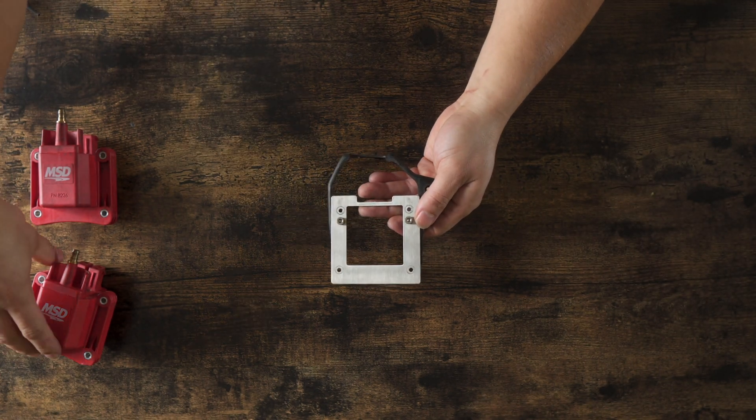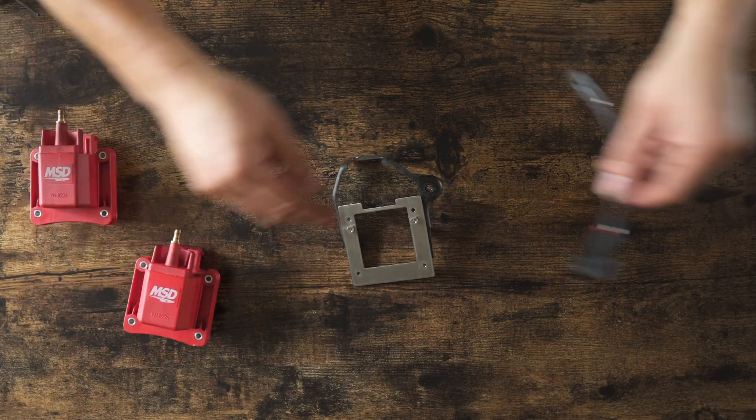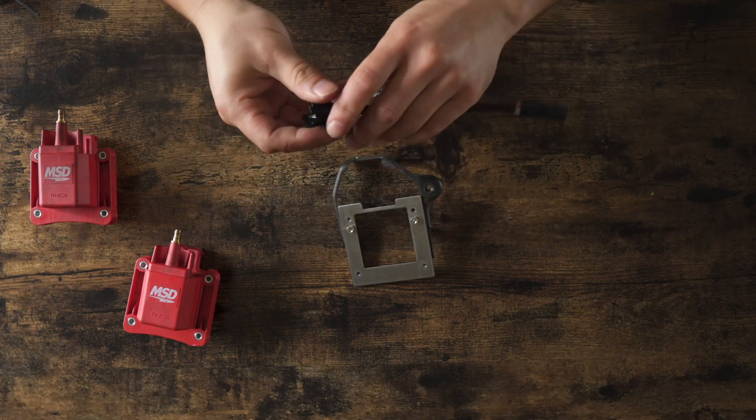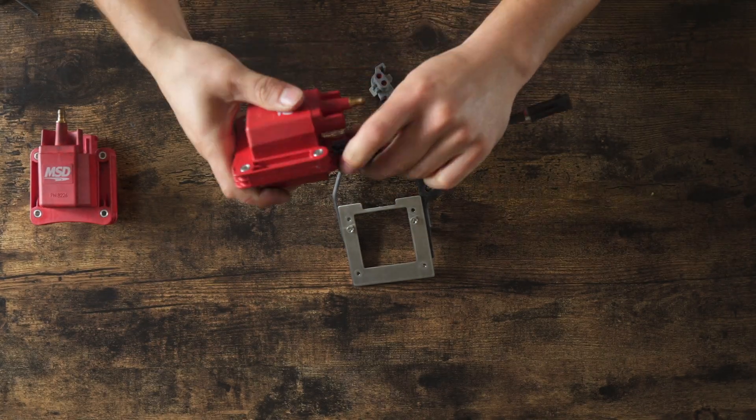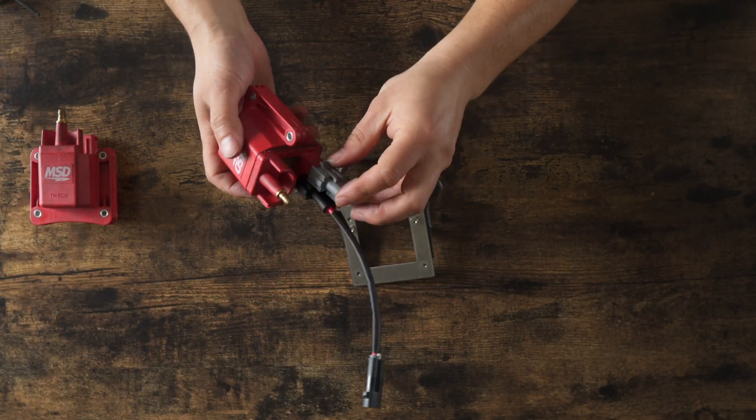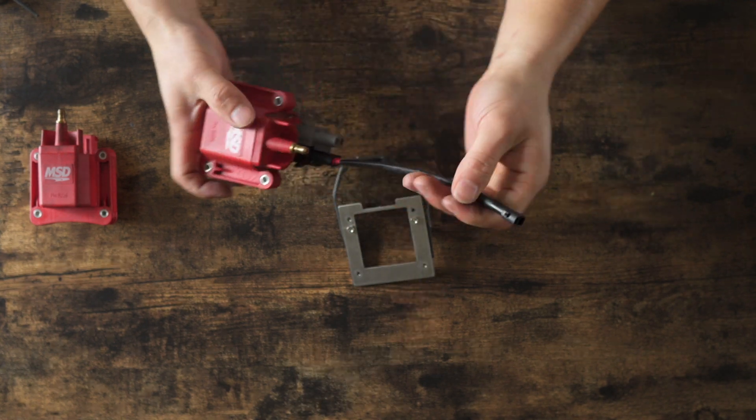and then what you're going to want to do is use the longer cable, and the black connector gets installed first. Make sure it clips, and then you use the gray connector to, again, we're not going to be using these, but you want to cover so nothing gets in there.